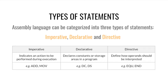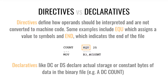Directives tell us how operands should actually be interpreted. A very popular directive is EQU — it equates a value to a symbol. So in this case we have count equating to 25, meaning 25 can be represented with the name count. We can say move into register 3 the number 25, or in other words move into register 3 count. Popular declaratives like DC or DS are used to declare storage space or declare constants.